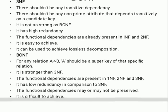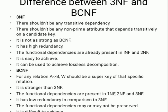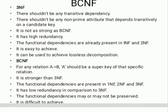For BCNF: for any functional dependency A→B, A should be a super key of that specific relation. It is stronger than 3NF. The functional dependencies are present in first, second, and third normal form. It has low redundancy in comparison to 3NF. The functional dependencies may or may not be preserved. It is difficult to achieve.